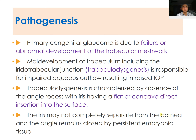Trabecular dysgenesis is characterized by absence of angle recess, with the iris having a flat or concave direct insertion into the surface. The iris may not completely separate from the cornea, and the angle remains closed by persistent embryonic tissue, so there is something present in the angle causing the problem.